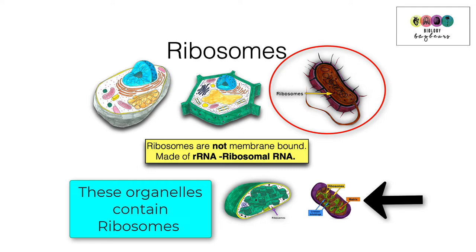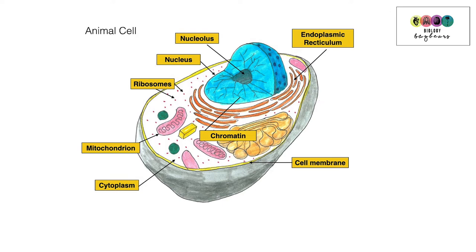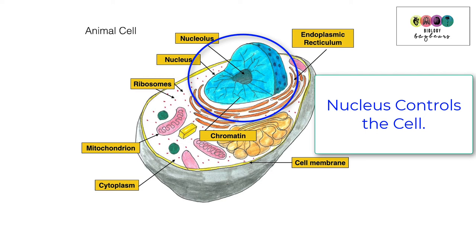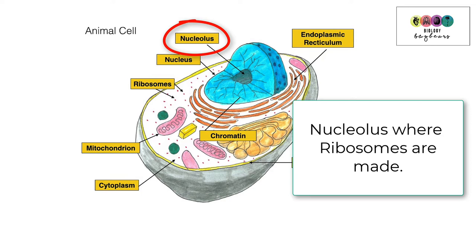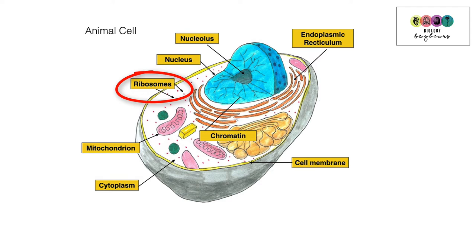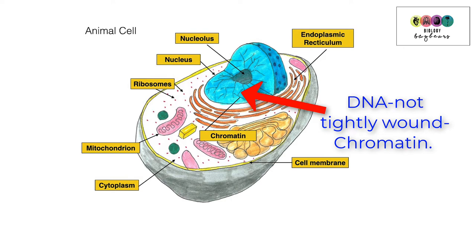This is a basic diagram of the ultra-structure of an animal cell with all the key labels. New to this diagram is the detail of the nucleus — you can see the nucleus controls the cell, and there's a dark part at the centre called the nucleolus, which is where ribosomes are made. Ribosomes make proteins. In the nucleus is where you find DNA, usually in a stringy form called chromatin.